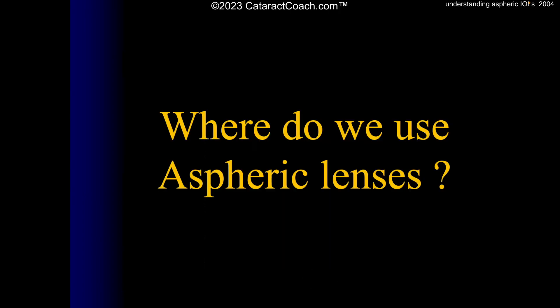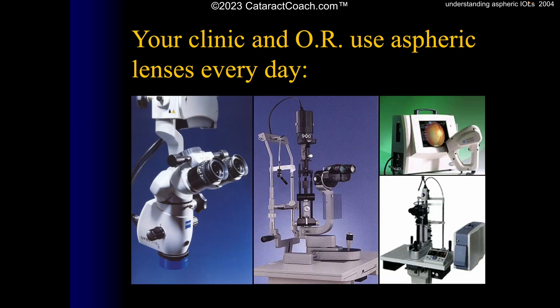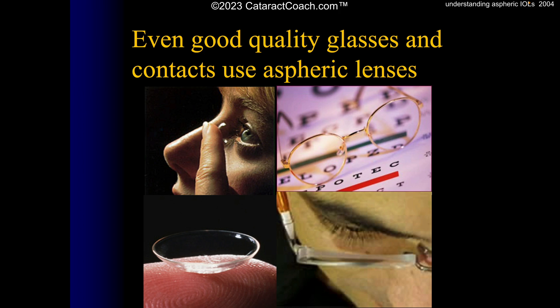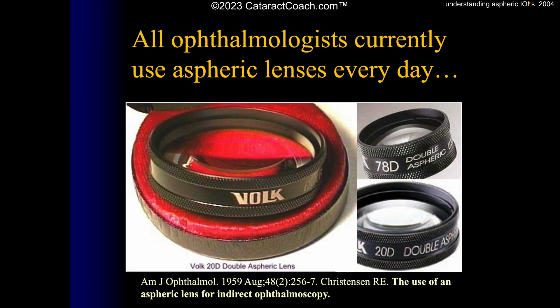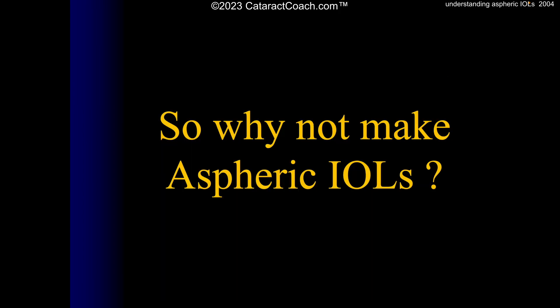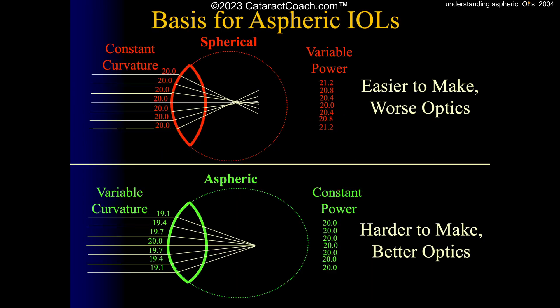A camera manufacturer's diagram shows the difference between spherical and aspheric lenses — you can see the distortion on a tablecloth pattern. Increasing positive spherical aberration, back towards zero, then negative spherical aberration. Where do we use aspheric lenses? Already in professional cameras, in your clinic and operating room every day, in contact lenses and glasses, and in the diagnostic lenses used to examine patients. So why not make an aspheric IOL? It's harder to make, but you get better optics — with aspheric design the curvature is variable but the power is constant, whereas in spherical design the curvature is the same but the power is variable.